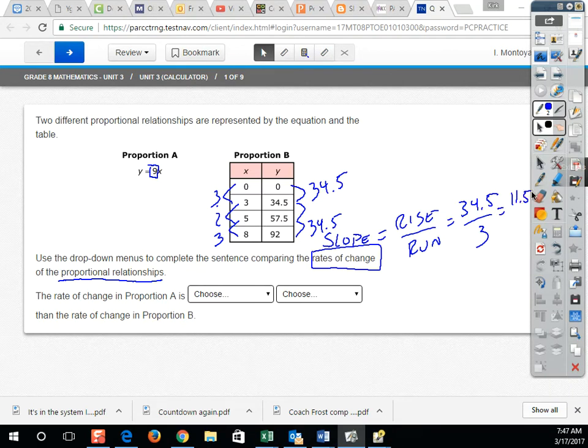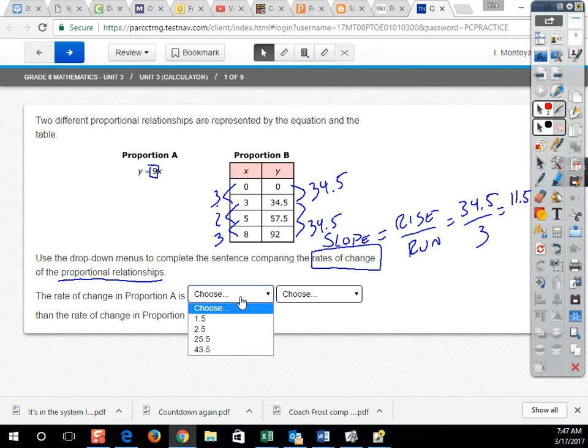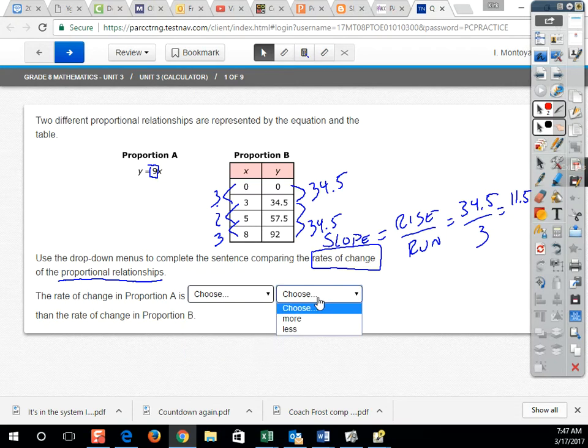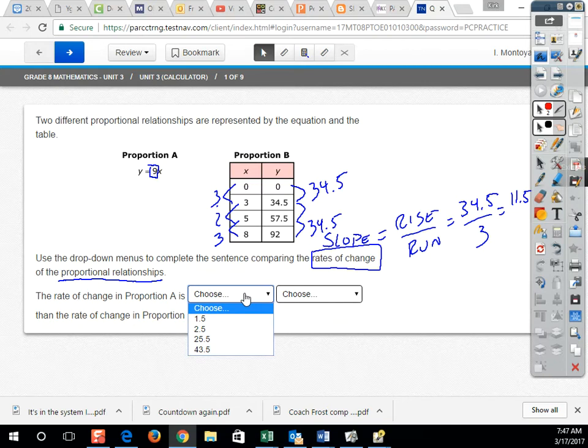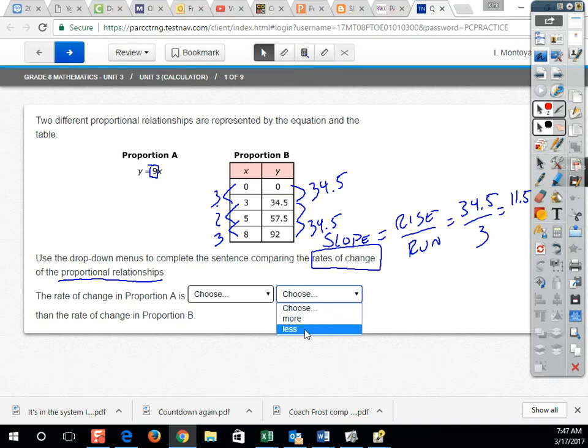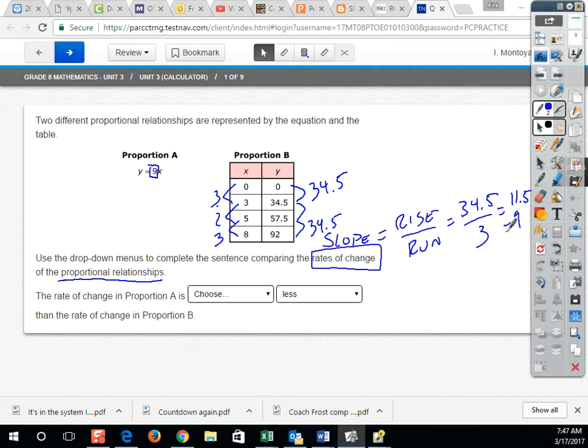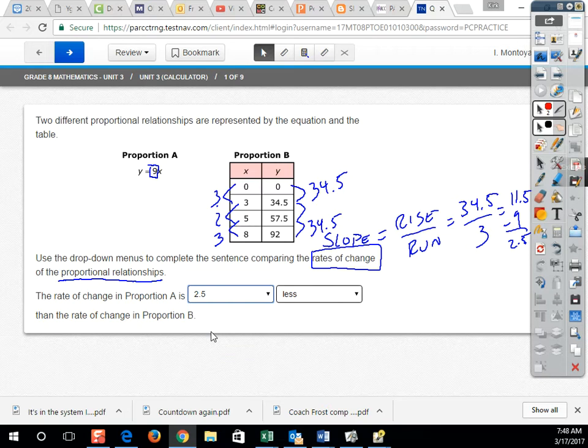So the rate of change in Proportion A is... I'm confused. So obviously 9 isn't here, and in here it says more or less. So in this case, we know it's less because 11.5 is bigger than 9, but how much less? Well, 11.5 minus 9 is 2.5. That was easy.